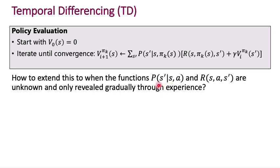In particular, the state that you end up at is observable to you, and that gives you some information about P of s-prime given s comma a. Similarly, you do get a reward back from the environment — this is the reinforcement learning setting. Every time you emit an action, you get to observe the next state and the reward. So you get samples from both of these functions — not the entire function or a formula for it, but samples. By acting in the environment you get more and more information about these two unknown quantities.